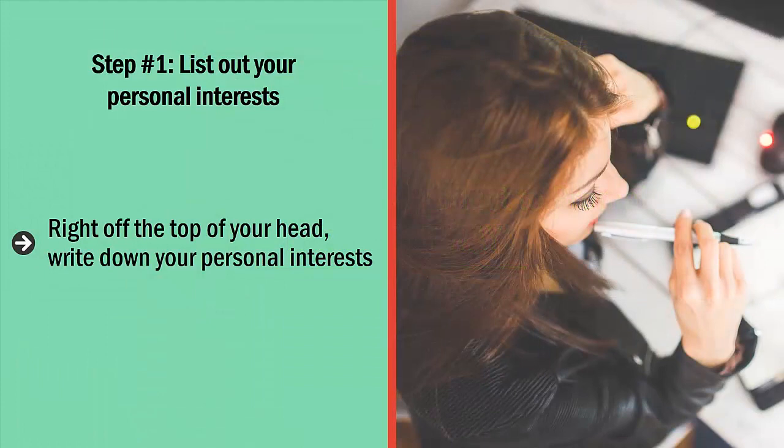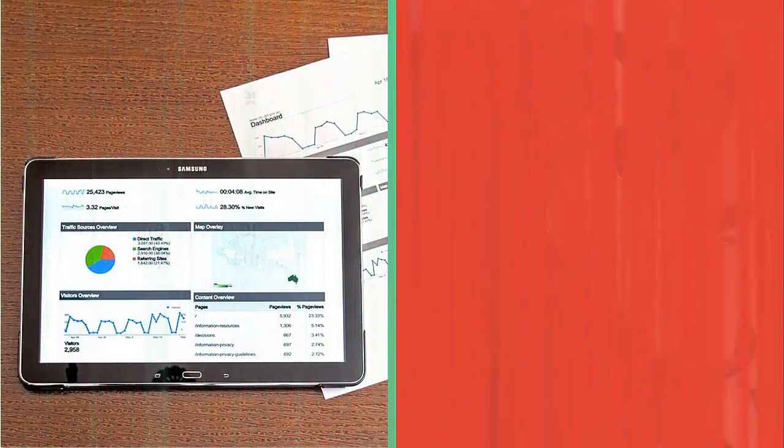Step 1: List out your personal interests. Right off the top of your head, write down your personal interests. These should be topics that you love talking about and are so interested in that you would talk about them even if you're not getting paid. Come up with a long list. As long as you're truly interested in these topics, write them down.